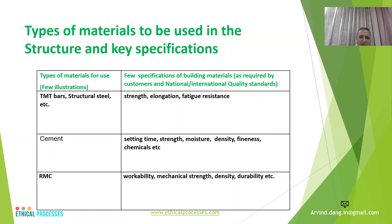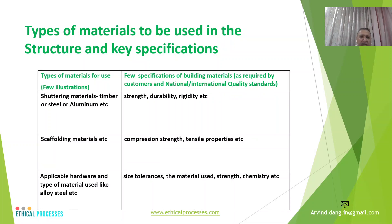For RMC, the designer must specify the grade in terms of mechanical strength, workability, and durability, depending on the type of structure being designed. For shuttering material — which may be timber, steel, or aluminum — the designer must specify strength, durability, and rigidity. For scaffolding, the designer must specify compression strength and tensile properties to prevent collapse. Lastly, various hardware items require attention to joining tolerances, material use, strength, and chemistry.